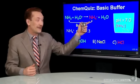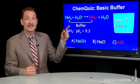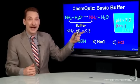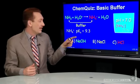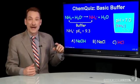So I'll form a buffer of NH4 plus and NH3, the ammonium ion and ammonia. The pH will be around 9.3.